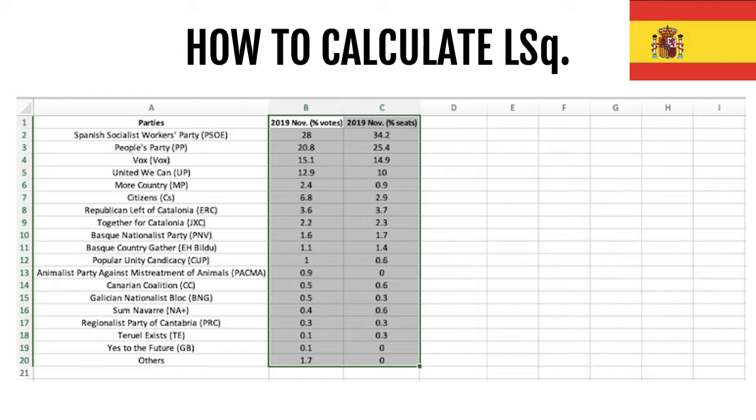I am going to use an example from my country, Spain, and we will be looking at the last parliamentary elections in Spain that took place in November 2019. In order to calculate the index, the first thing you need is to have the percentage of votes and the percentage of seats.